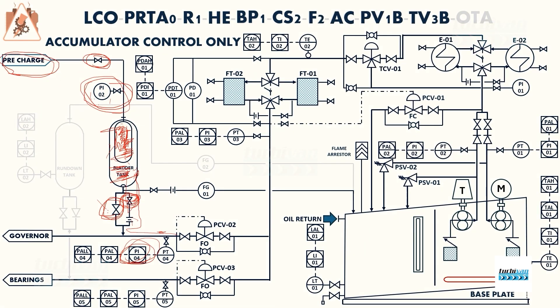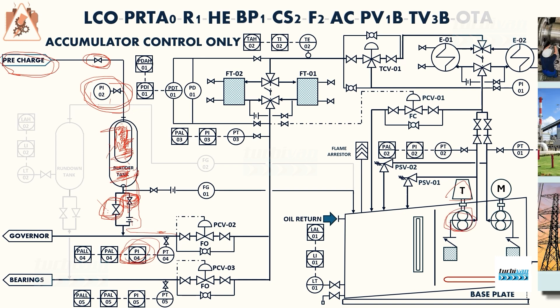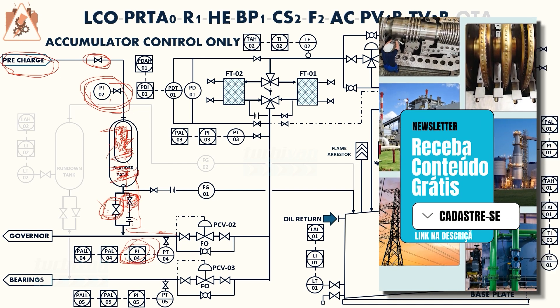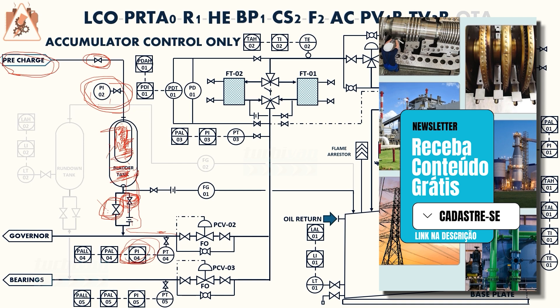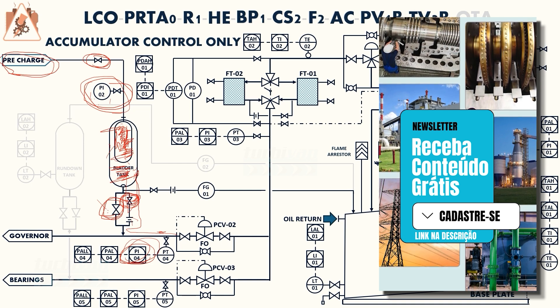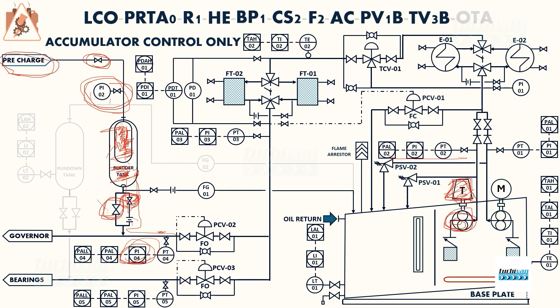Imagine the steam turbine is driving our pump when an overspeed event occurs and the turbine trips. The automation detects the pressure drop and starts the electric motor-driven pump. However, between the turbine trip and the electric motor starting, there is a delta-T time interval during which there is no oil supply. During this period, before the electric motor pump is fully operational, system pressure begins to drop.